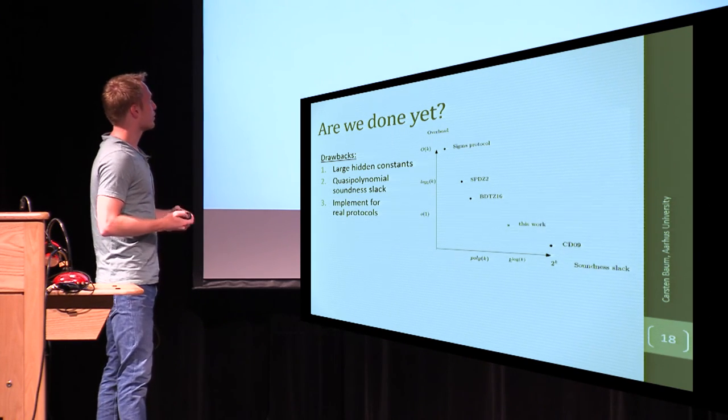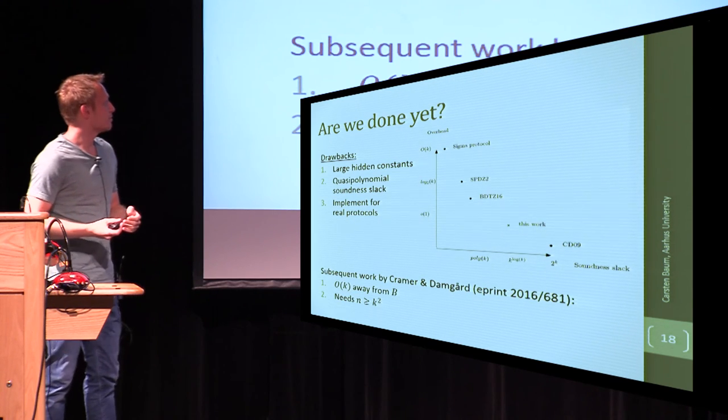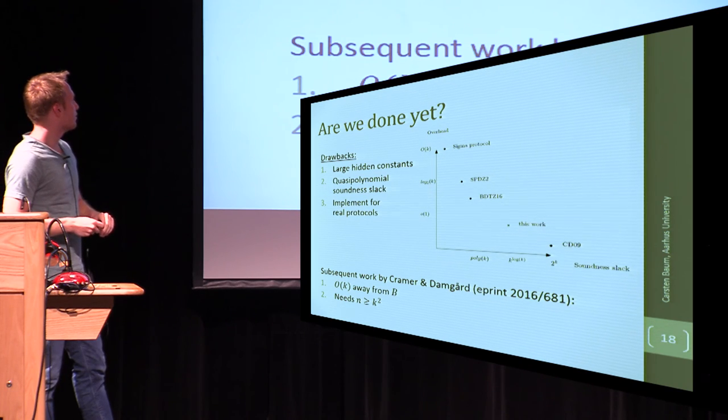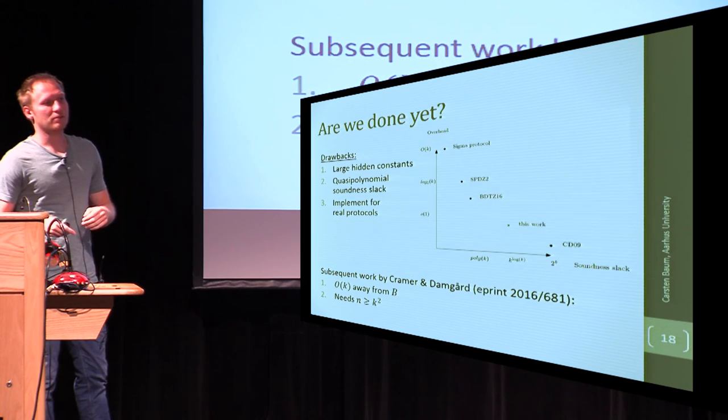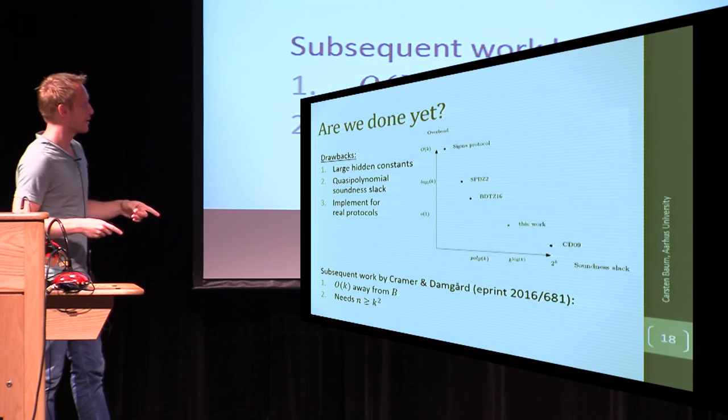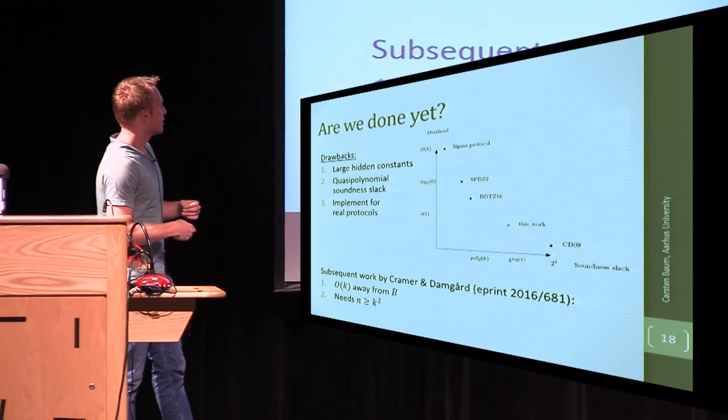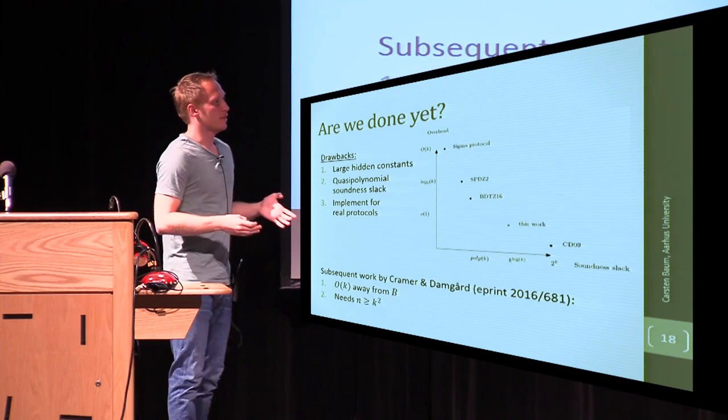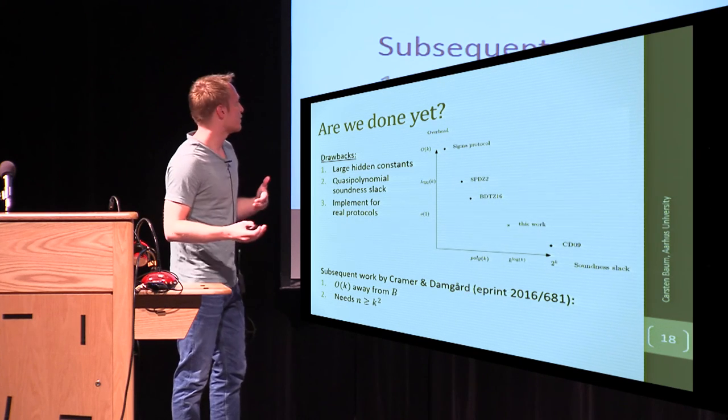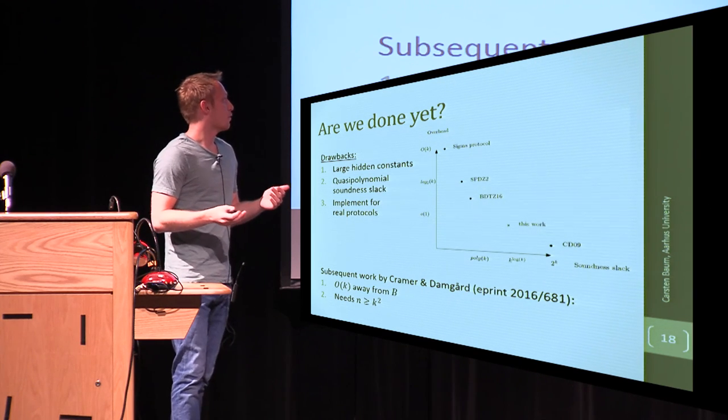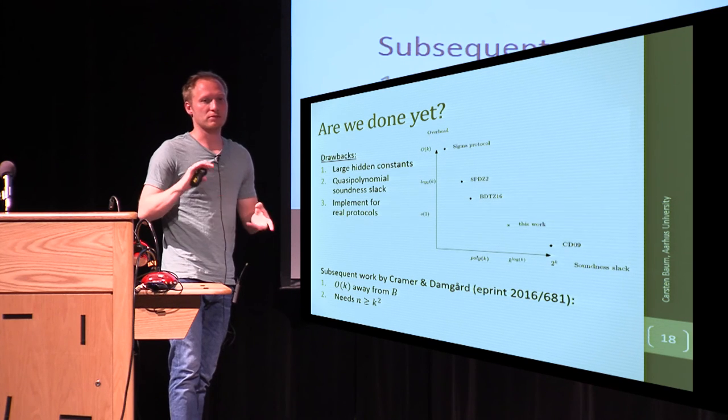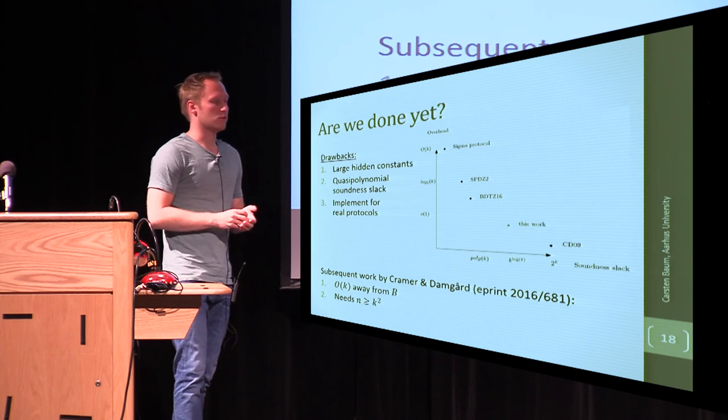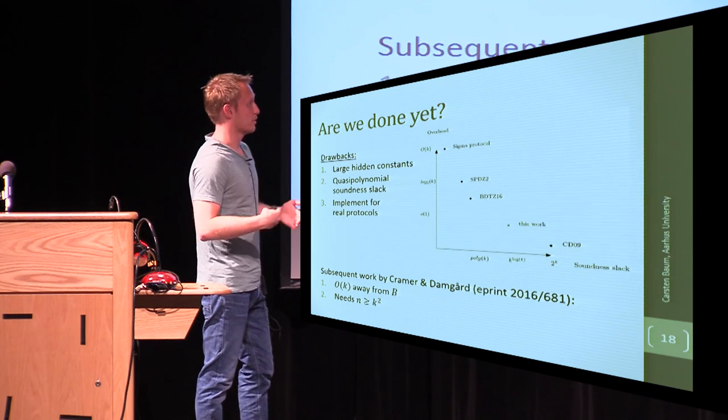And after we published our work on ePrint, there was some subsequent work by Kramer and Damgaard, who showed that, actually, you can do this whole thing with a linear soundness slack, but they need this n to be bigger than k squared, where in our case it was k times log k. So, first of all, there are techniques for... there are more involved than our somewhat simplistic bins and balls game. So it's definitely also interesting to see, to look at their work and how it evolves.